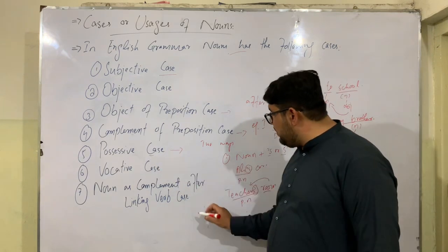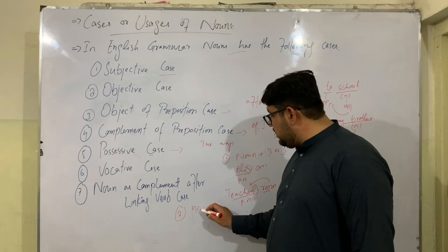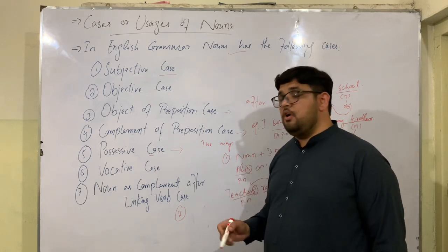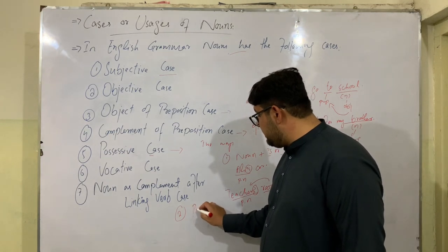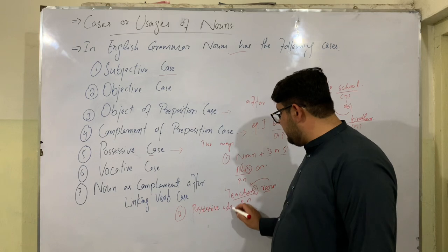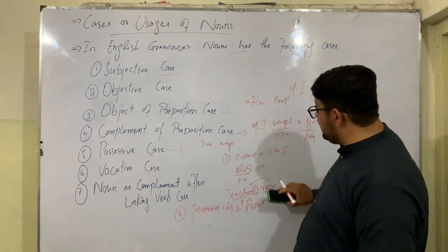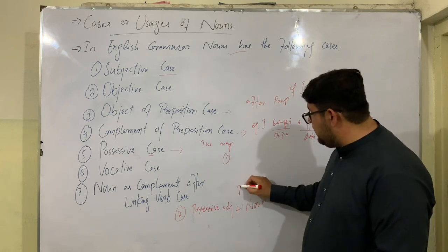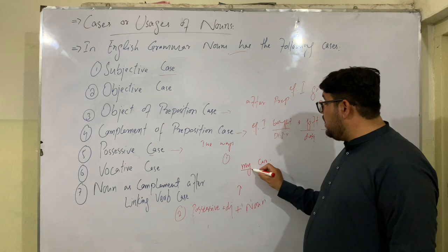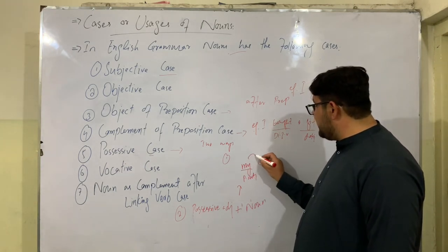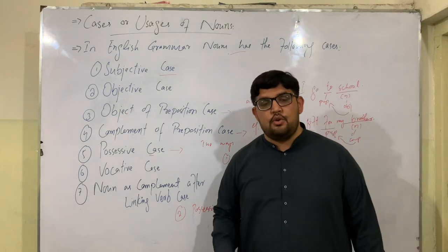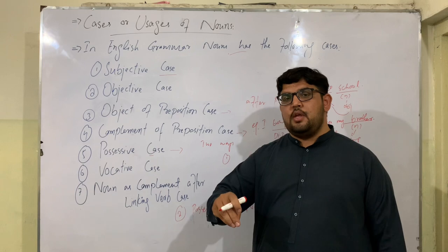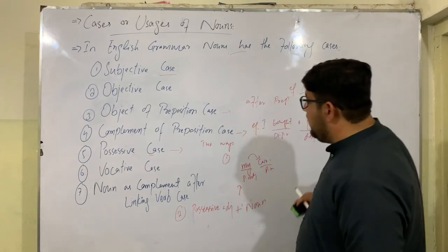The second way of making a possessive noun is by using a possessive adjective followed by a noun — possessive adjective plus noun. For example: 'my car.' Here 'my' is a possessive adjective, and it makes 'car' a possessive noun because it also expresses possession or ownership. So the possessive case can be made in these two ways: noun plus apostrophe-s (or s-apostrophe), and possessive adjective plus noun.